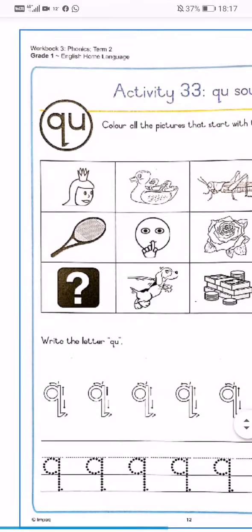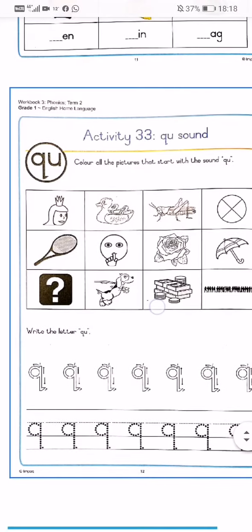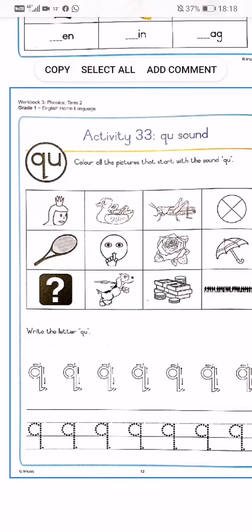For activity 33, you are doing the Q sound. Colour all the pictures. Let's start with the sound Q. Queen, yes. Duck, no.